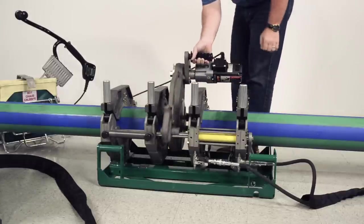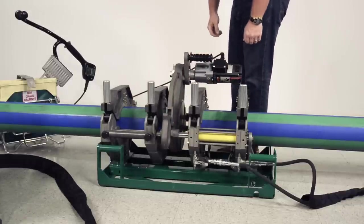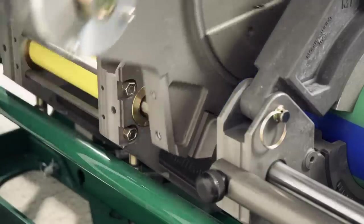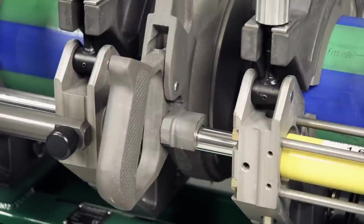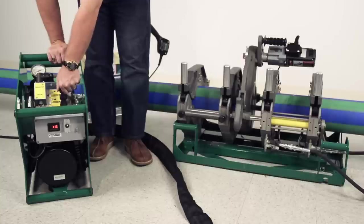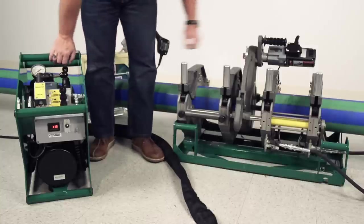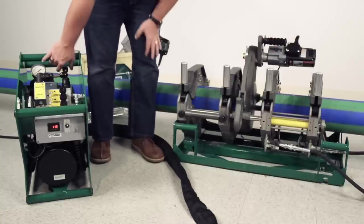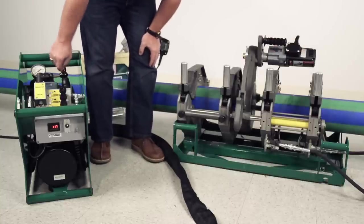Now, place the facer into the machine, placing the guide rod brackets over the guide rods. Ensure that the latch is locked and begin the facing procedure. Make sure that the pipe ends are not starting in contact with the facer. Turn the facer on and bring the pipe ends against the facer with minimal pressure.